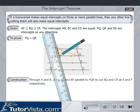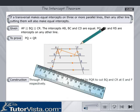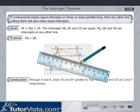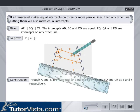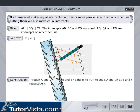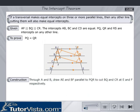Through A and B, draw AE and BF parallel to PQR. Click Go for the proof of the theorem.